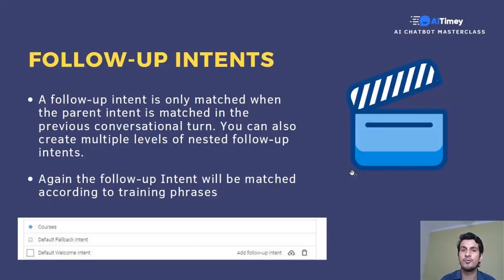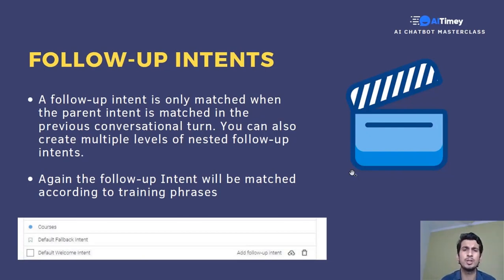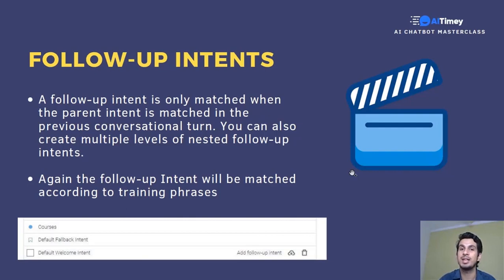Now let's discuss follow-up intents. Imagine a hall of 50 intents — when you call out a training phrase, one intent is triggered. Now suppose inside that hall you put five intents inside a cabin, and that cabin has a gatekeeper — one parent intent. So 44 intents roam freely, while one intent is gatekeeping five intents that are sheltered within it. If you can access that one parent intent, you can access those five follow-up intents. For example, if you're buying groceries and say 'I want jam, what is the pricing,' once that intent is triggered, a follow-up might ask 'which size would you want?'